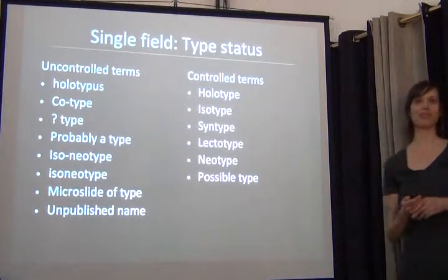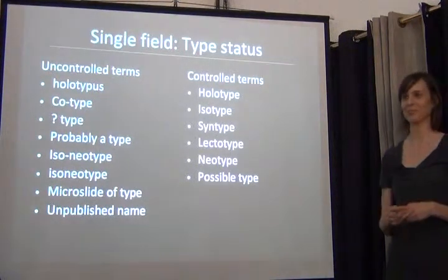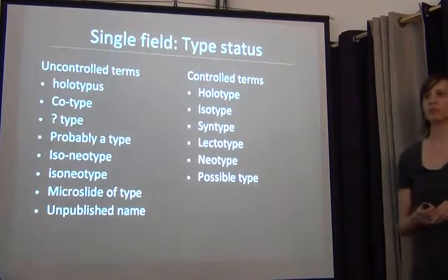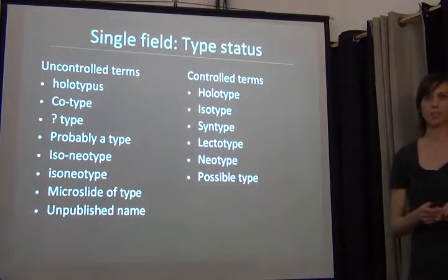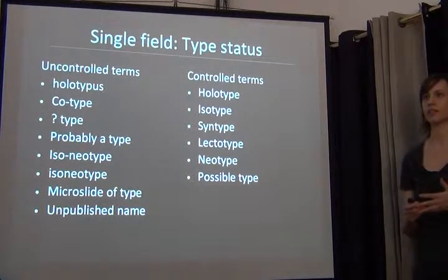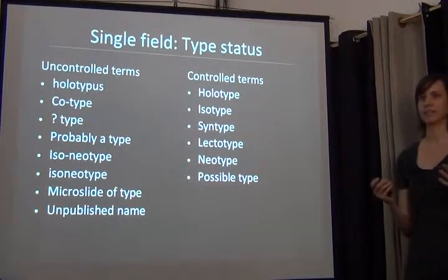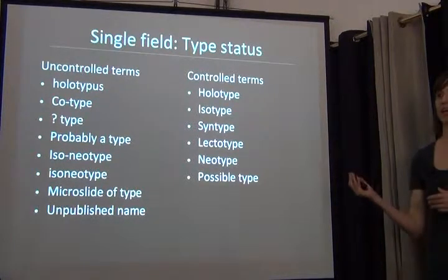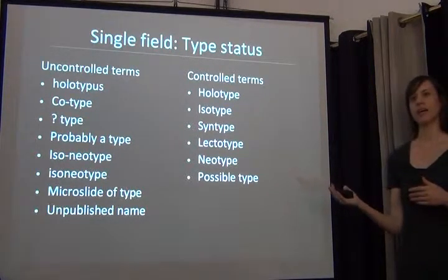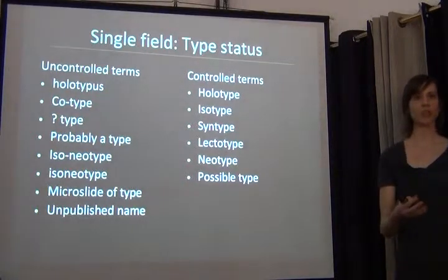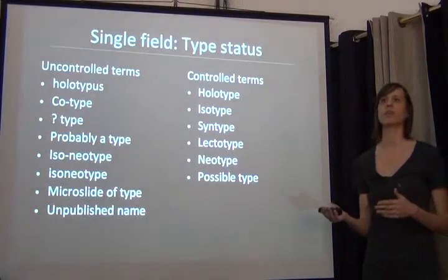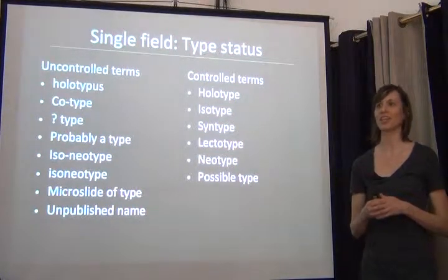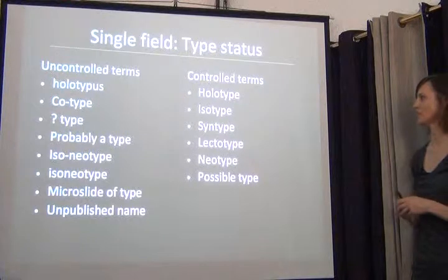My favorite example from the New York Botanical Garden Herbarium is type status. We've been databasing all of our types — we have about 150,000 type specimens across vascular plants, fungi, lichens, and bryophytes. We're part of the Global Plants Initiative, and as part of the data export for that, you have to map your type status terms to 16 terms within the controlled vocabulary for the Global Plants Initiative.